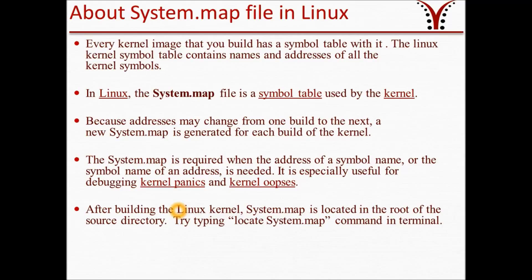Our final topic is about the system.map file. Every kernel image that you build has a symbol table with it. The Linux kernel symbol table contains names and addresses of all the kernel symbols. In Linux, the system.map file is used by the kernel. Because the addresses may change from one build to the next, a new system.map is generated for each build of the kernel. The system.map is required when the address of a symbol name, or the symbol name of an address, is needed. It is typically useful for debugging kernel panics and kernel oops. After building the Linux kernel, system.map is located in the root of the source directory. You can type the locate system.map command in the terminal to find the system.map file in your system.